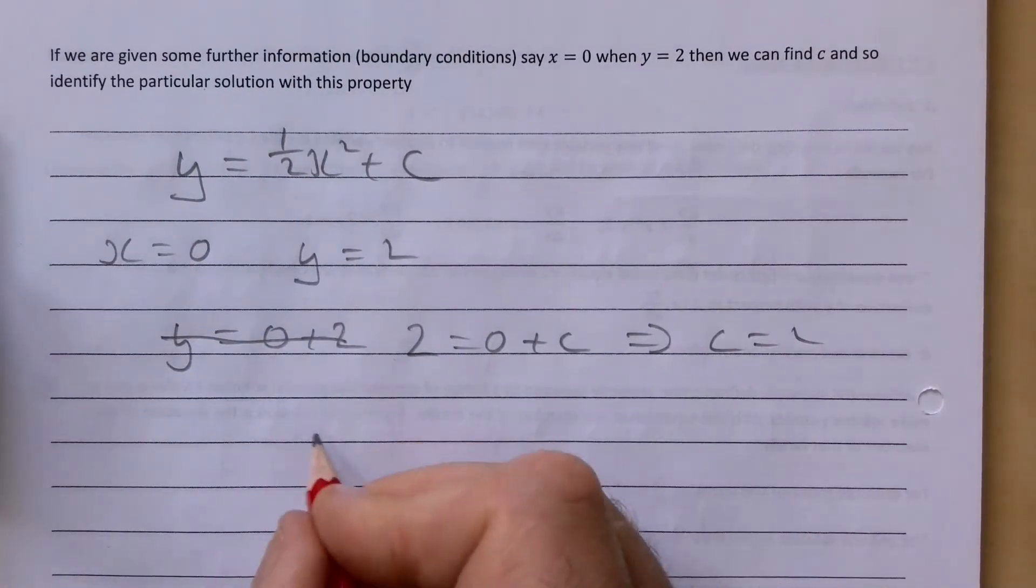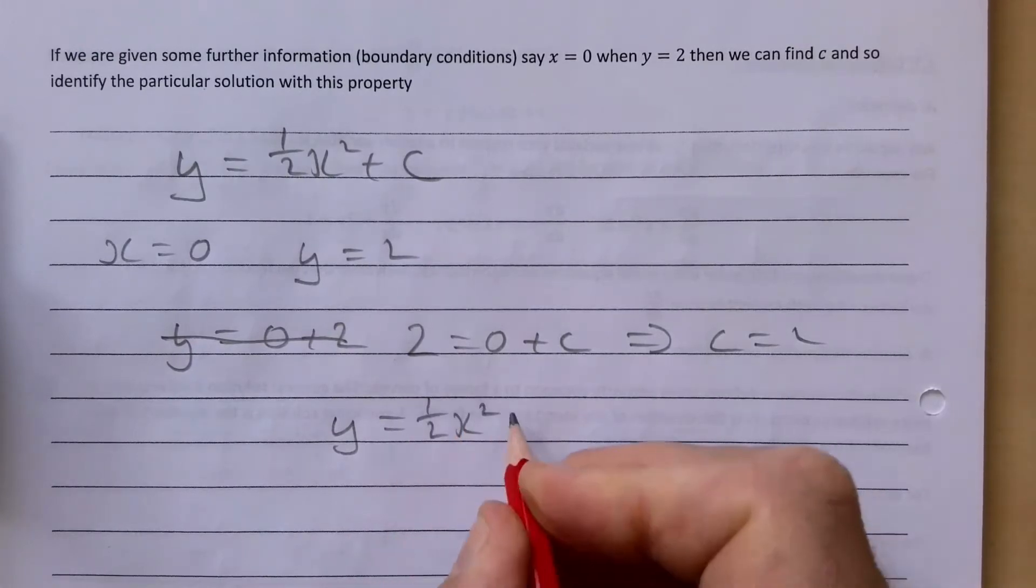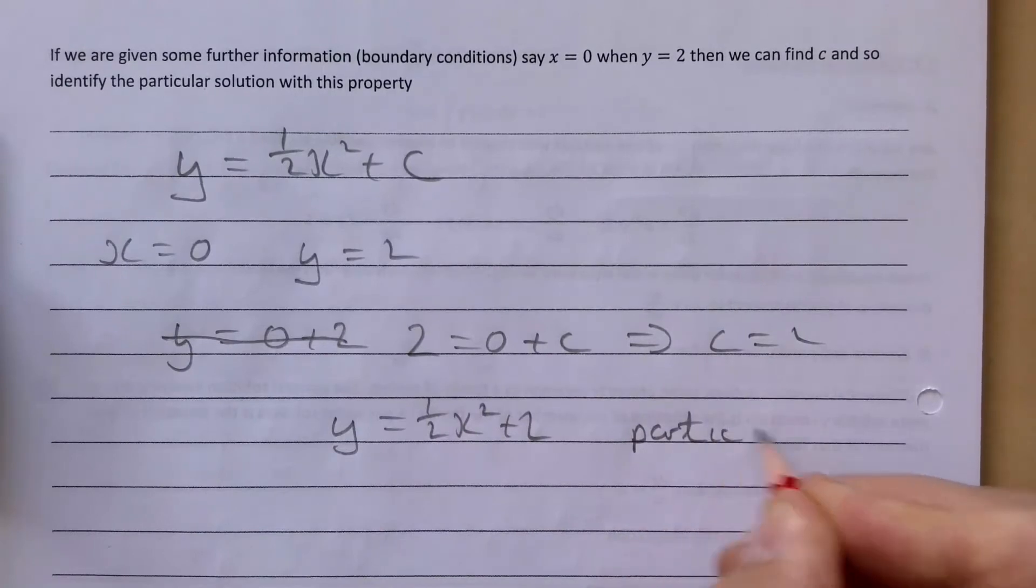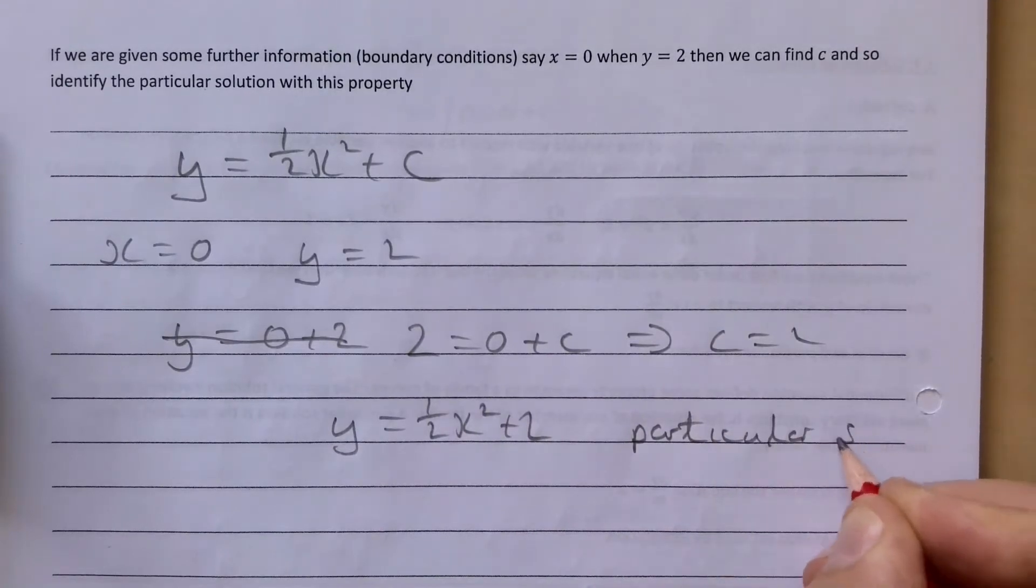So the particular solution is y = ½x² + 2, and this is called our particular solution.